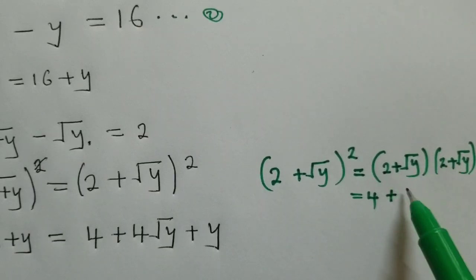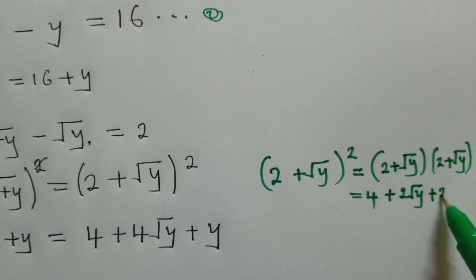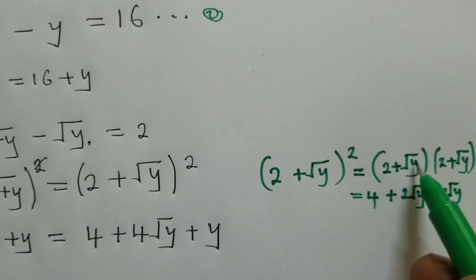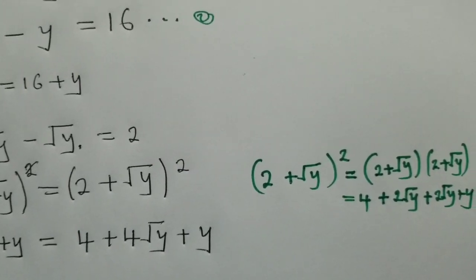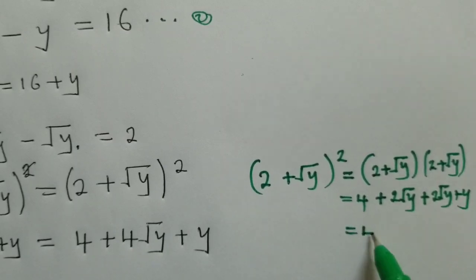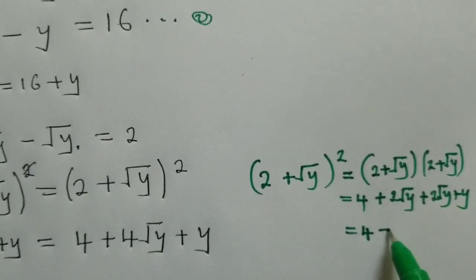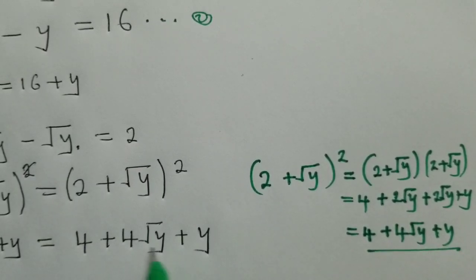This one will also give us 2 root of y. And root of y times root of y will just give us y. So from here, you maintain 4. This and this can be added, we shall get something like this plus y. And this is what we have right here.